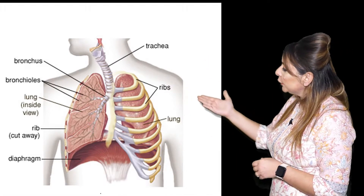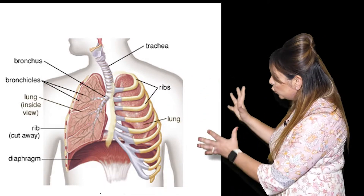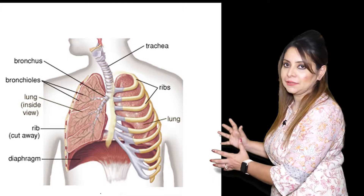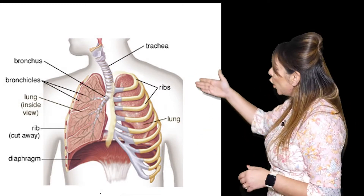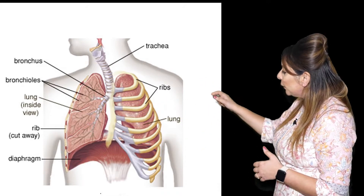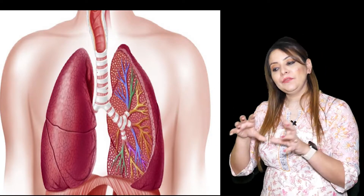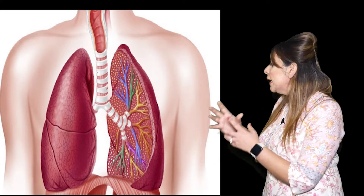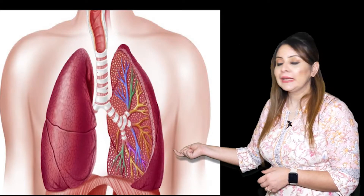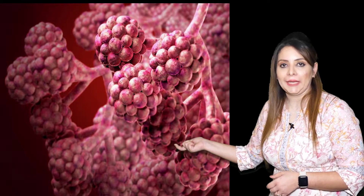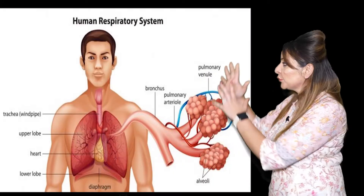The trachea divides into two branches called bronchi, which enter into the lungs — a pair of lungs present in our thoracic cavity. Inside the lungs, the bronchi divide further into primary bronchi, then secondary bronchi, then tertiary bronchi, and finally into bronchioles, which end in sac-like structures called alveoli, or air sacs. This is the complete respiratory tract.